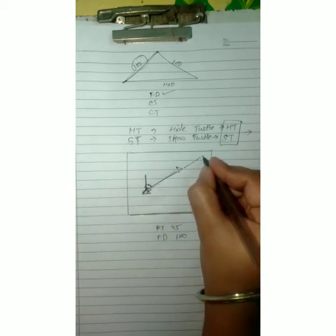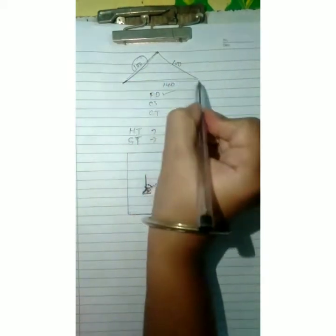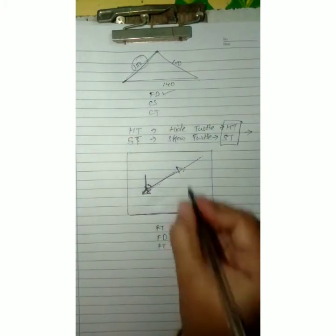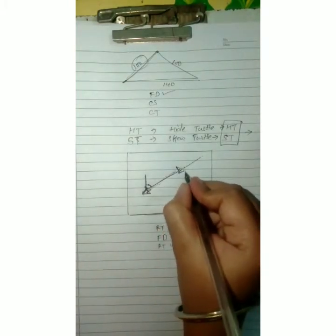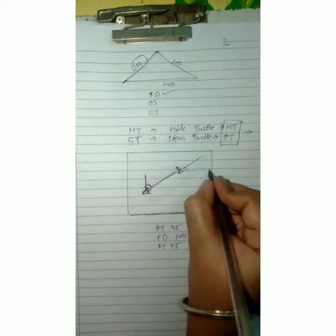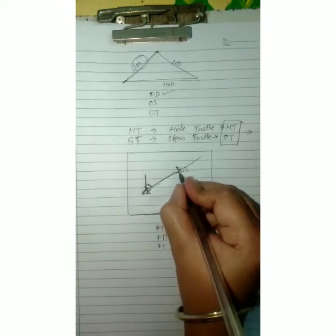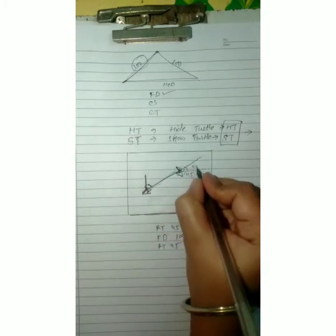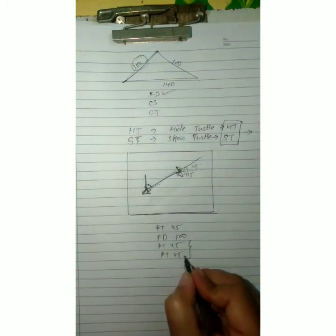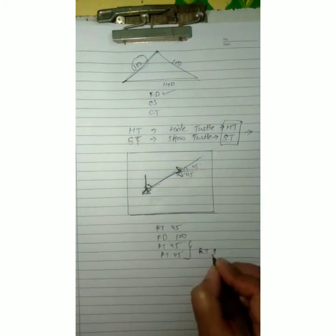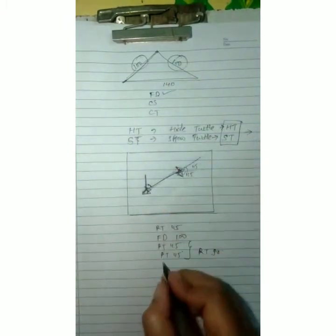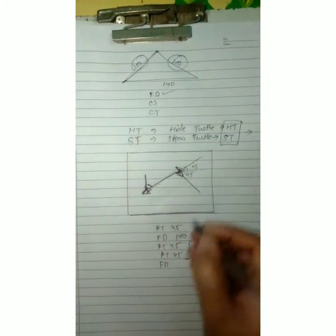Now you can see the turtle is facing this direction and where we want the line? Down side. First, RT 45 — your turtle will come here. But here also you don't want the line this side; you want the line down in a slant way. Again, right side of turtle, 45 degrees. So again RT 45 — instead of writing RT 45 twice you can write RT 90. Now to move in the same direction, FD 100.